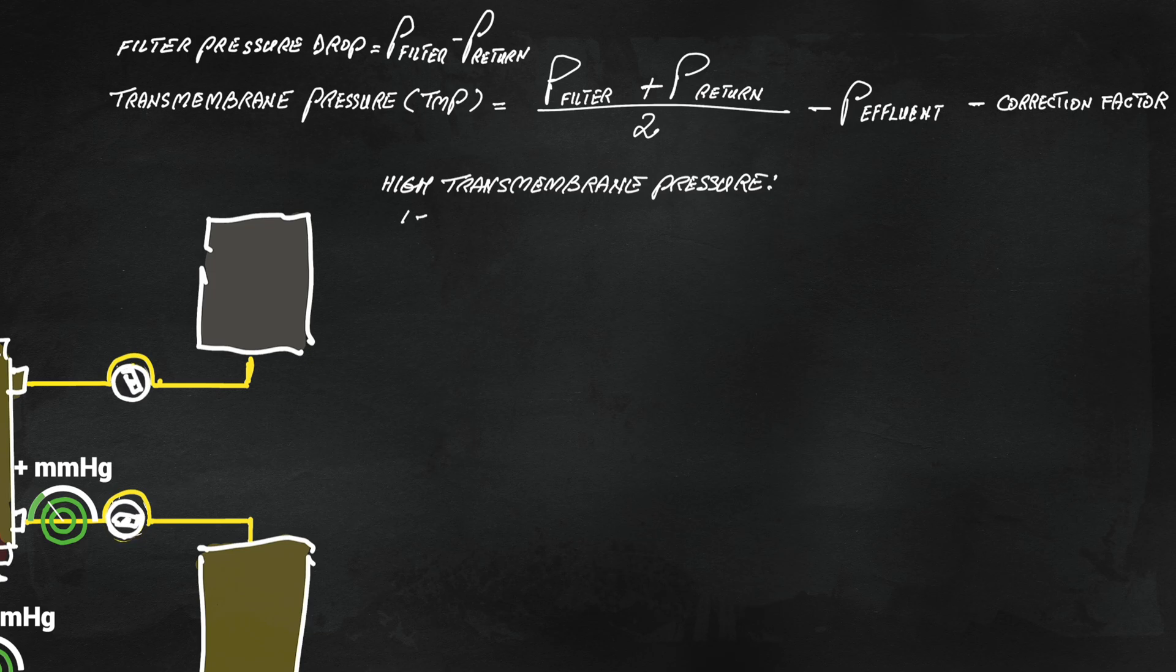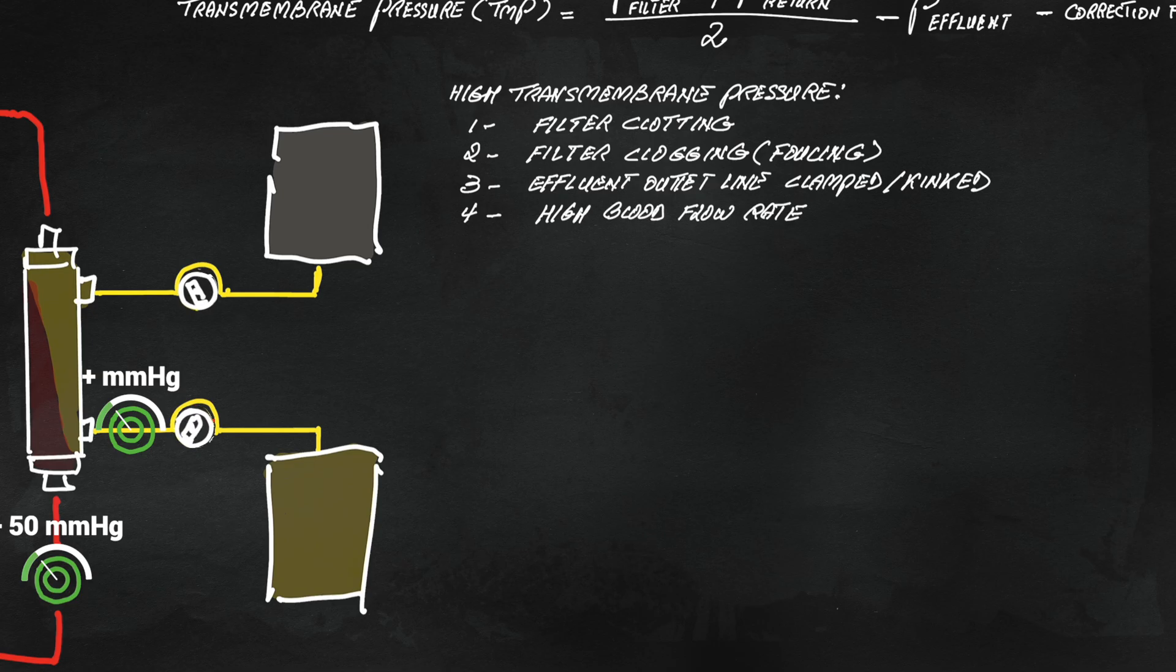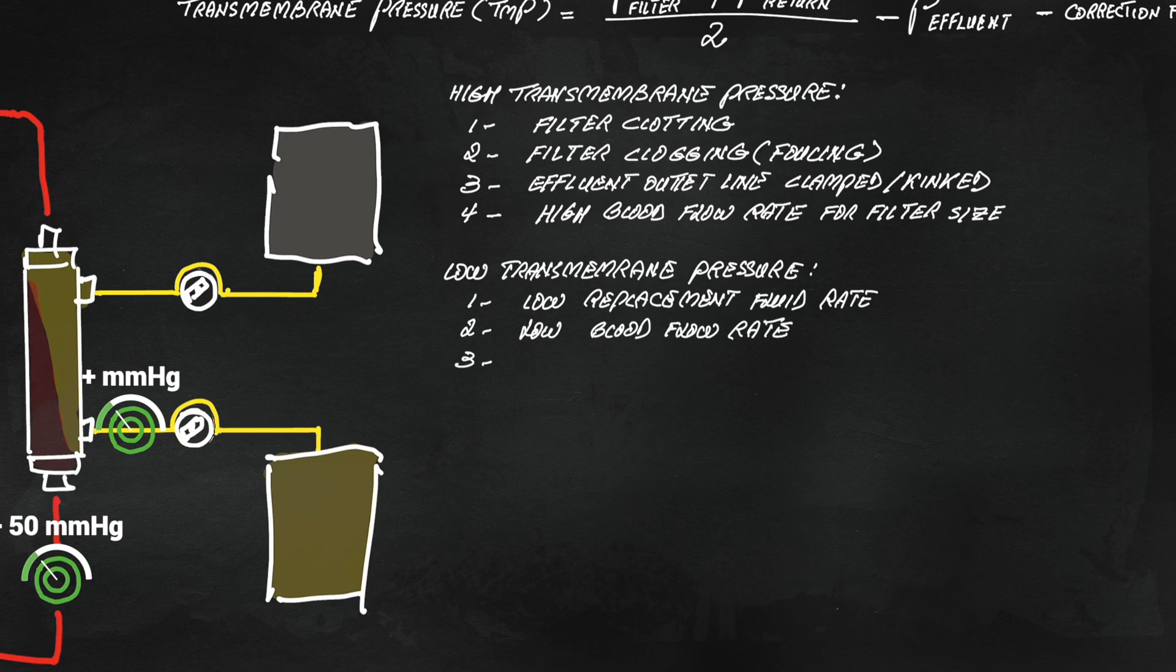Transmembrane pressure is helpful because it trends upwards with filter clotting or membrane fouling, or in other words, clogging. Transmembrane pressure can drop due to membrane leak or pre-filter infusion due to lowering in blood viscosity.